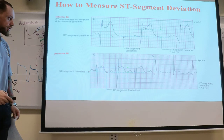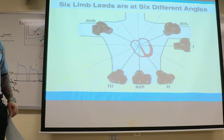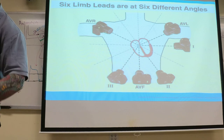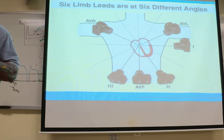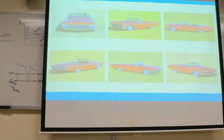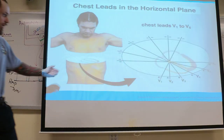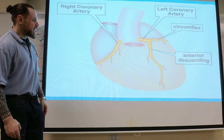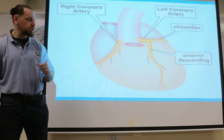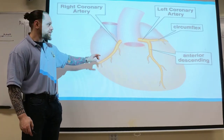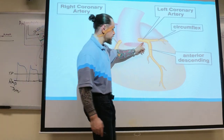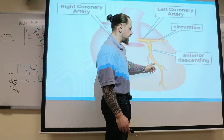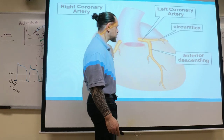The 12-lead EKG looks at all views of the heart and makes a picture. 90% of the time you want to find a STEMI. The chest leads look at the anterior septal and lateral walls of the heart, making a curvature around the heart. We correlate the EKG findings to the coronaries: the right coronary, the left coronary artery — which subdivides into the circumflex and the LAD, left anterior descending.